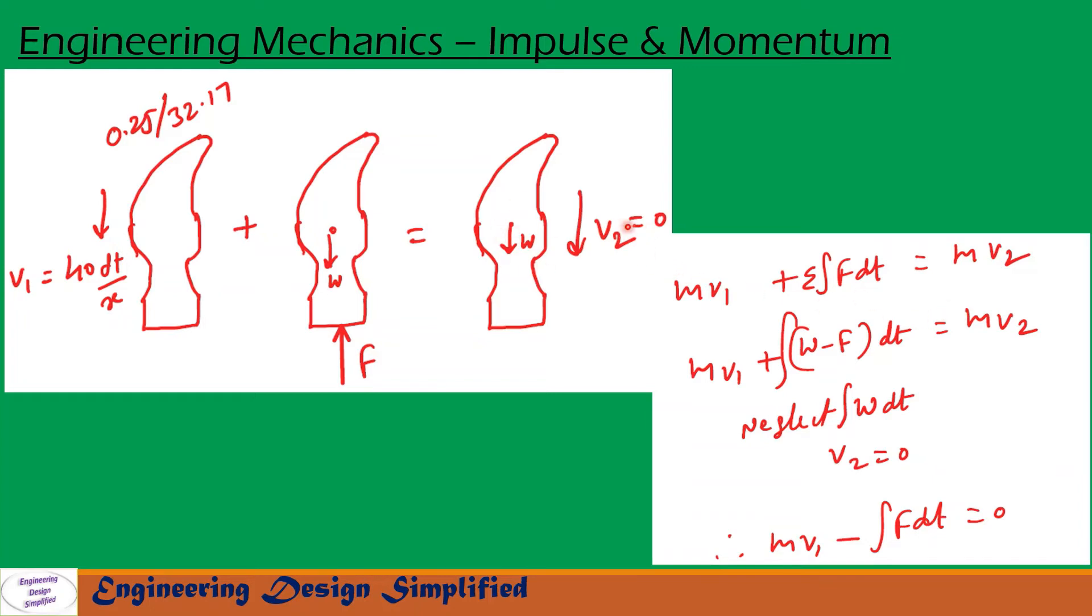Since v2 is zero, final momentum of the hammer and nail: m v1 plus integral of (W minus F) into dt equals m v2. In this problem, it's also given that impulse due to weight of the hammer is neglected.